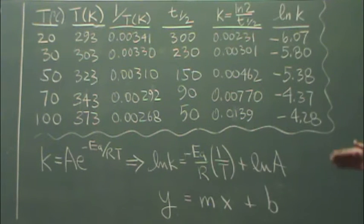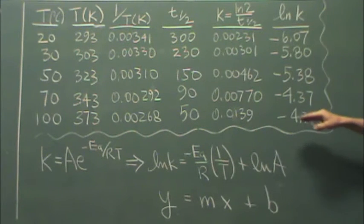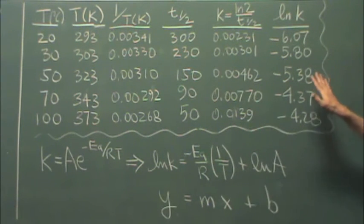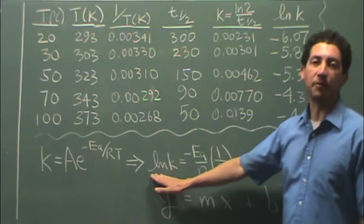And then, finally, I'm finding the natural log of k. So that's the natural log of all these numbers right here, the natural log of the previous column. Why do I need the natural log of k? Because that's my y-axis.